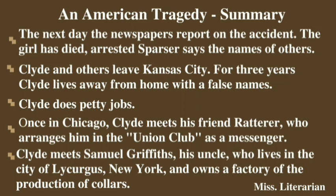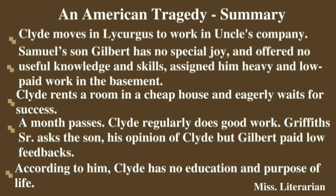One day at the club, Samuel Griffiths appears — Clyde's uncle who lives in Lycurgus, New York, and owns a collar factory. The meeting leads Clyde to move to Lycurgus, where his uncle has promised him a place in the factory. However, Samuel's son Gilbert accepts Clyde, his cousin, with no special joy and makes sure not to provide him with any useful knowledge or skills.